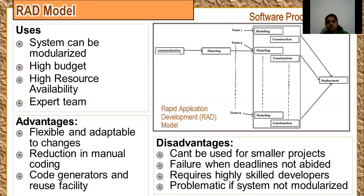Advantages of this approach: it is flexible and adaptable to changes, and as you are working on small modules, rework becomes easy. There is reduction in manual coding because you can reuse already-built components using an object-oriented programming approach and code generators. Disadvantages: it cannot be used for smaller projects because you won't be able to modularize them. If one team fails to complete their task by the deadline, integration has to wait and the deadline will not be met. Highly skilled developers are required, meaning higher pay. If the system is not modularized, the RAD model will fail.